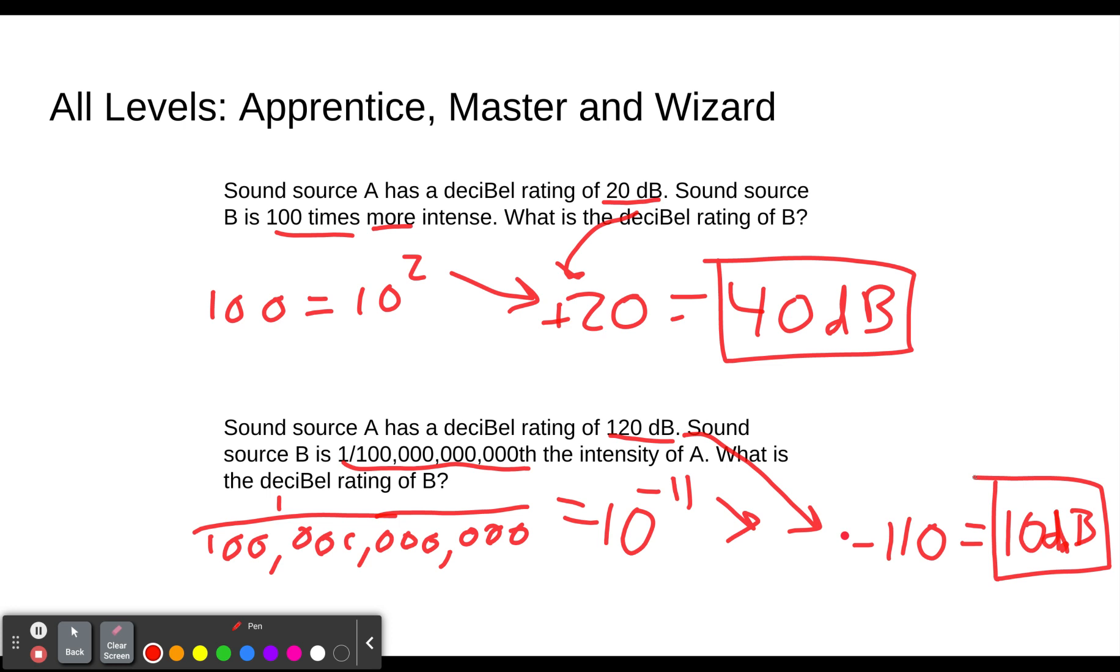And that's all you're going to do. Each time you just take the number, whatever it is, the factor of how much bigger or smaller it is, turn it into an order of magnitude. Negative 11th is the order of magnitude. You add a zero to the end of that, negative 110. You take the decibel rating of source A, and you either add or subtract whatever sign you have here. And that gives you your final answer. That tells you how quiet or loud it is compared to it. So 10 decibels is one 100 billionth times quieter than 120 decibels.